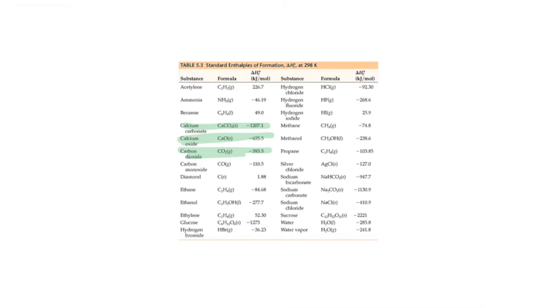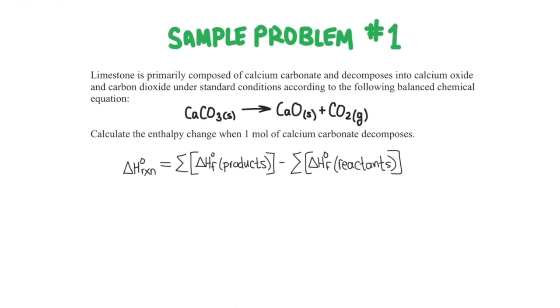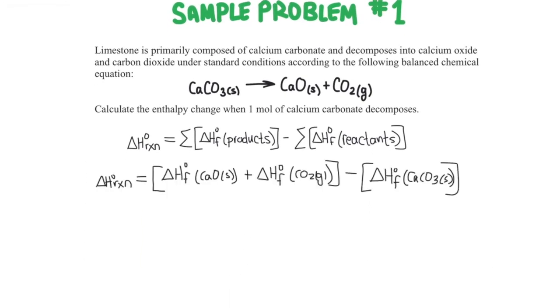And so let's go ahead and plug these into our equation and see if we can find the enthalpy change for this chemical reaction. So first I've listed all of the different products here. So we have the enthalpy of formation of calcium oxide, enthalpy of formation of CO2. We're adding those together and then from that we're going to subtract the enthalpy of formation of calcium carbonate. And then we can go ahead and plug in the values that we got in our table to calculate the enthalpy for this reaction.